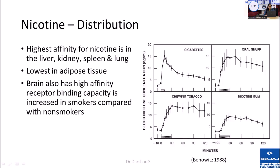Even the brain has a high affinity, and receptor binding capacity is increased in smokers compared to non-smokers. As you can see on the right side of the slide, the different routes of consumption lead to different patterns of blood nicotine concentration. Smoking produces a steep peak in the first few minutes and then a stable decline, while oral snuff and chewing tobacco show less of an acute increase and more of a plateau kind of picture.